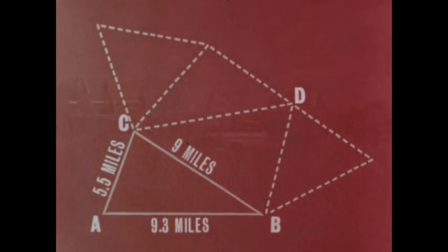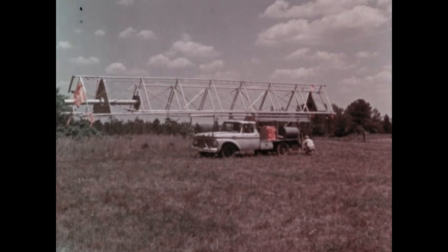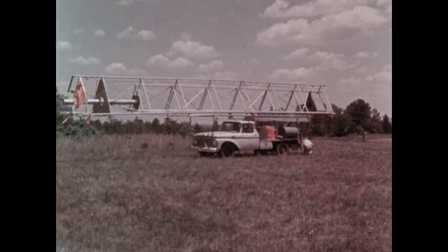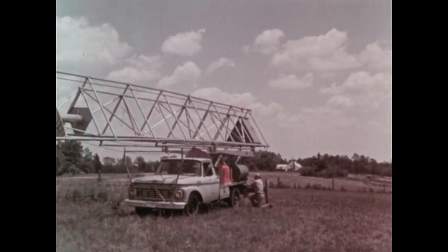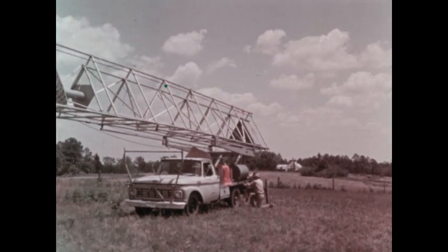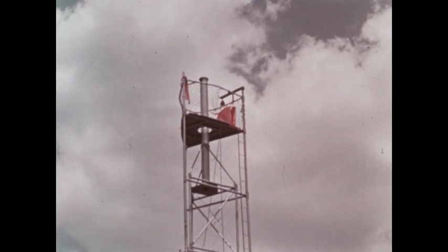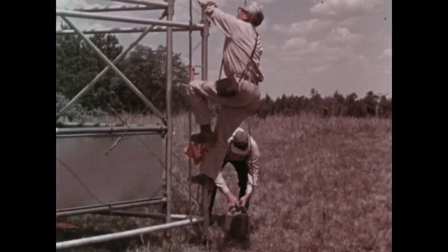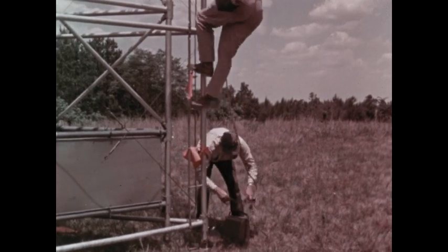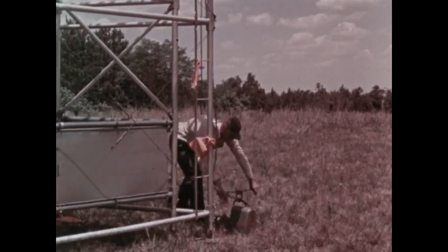In practice, of course, it isn't always simple to do this. In flat country, for example, where there are no natural high points or tall buildings, surveying teams must provide their own high points. Tall towers like this one are used as platforms by the surveyors. This allows them to sight over any obstructions like trees to the other points of the surveying triangle.